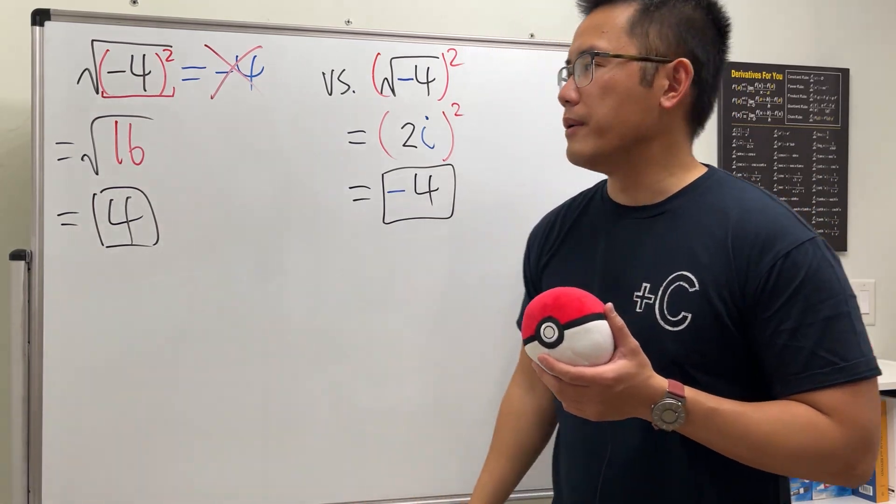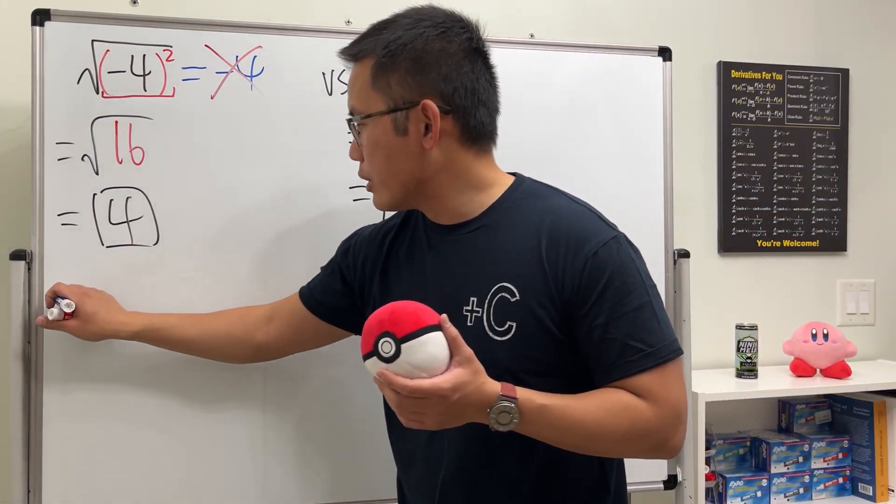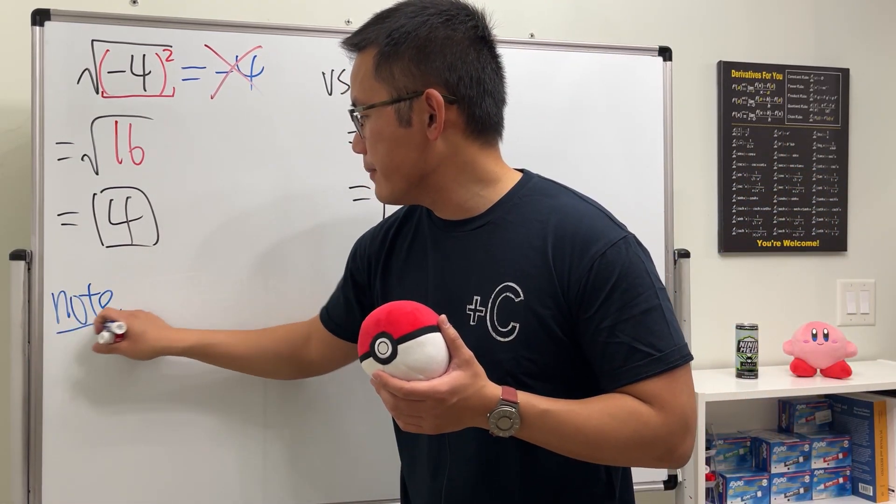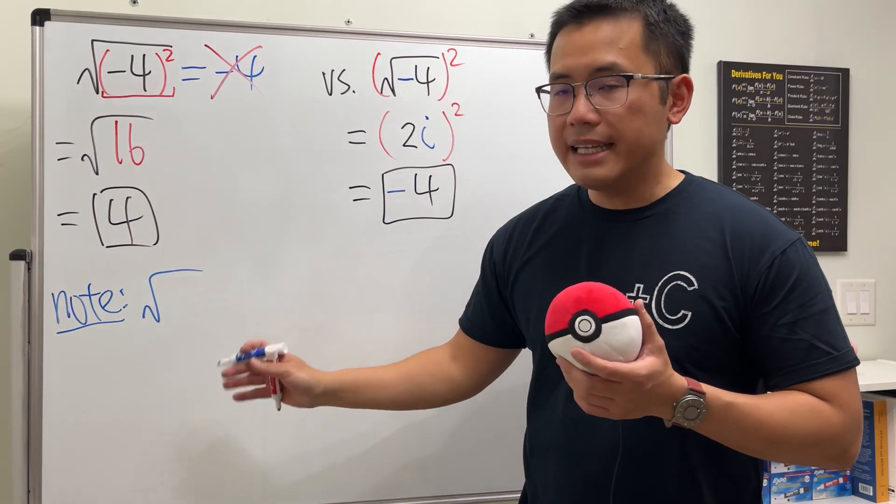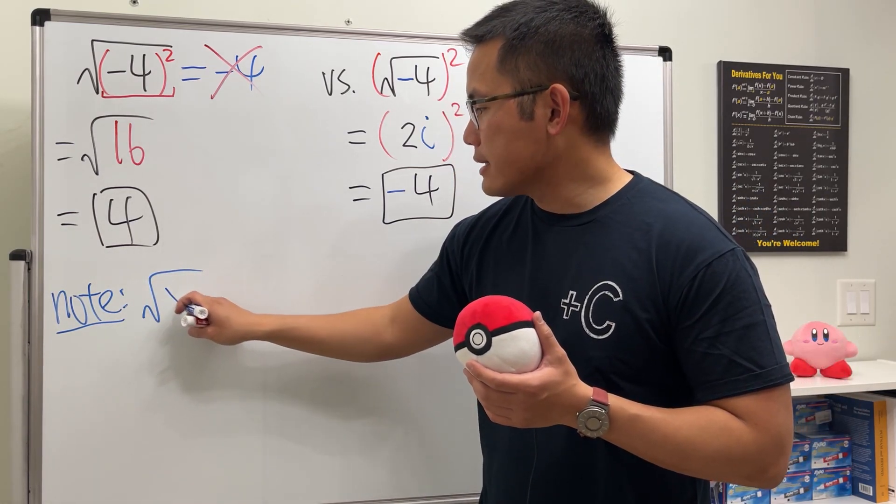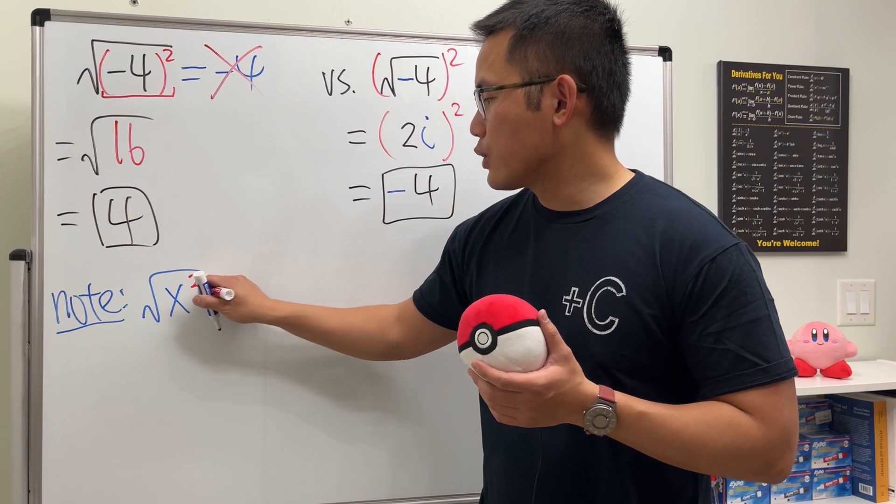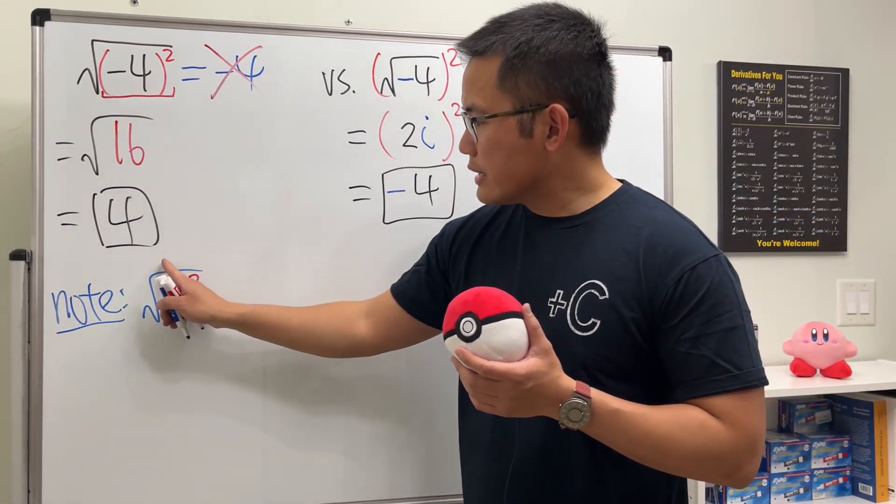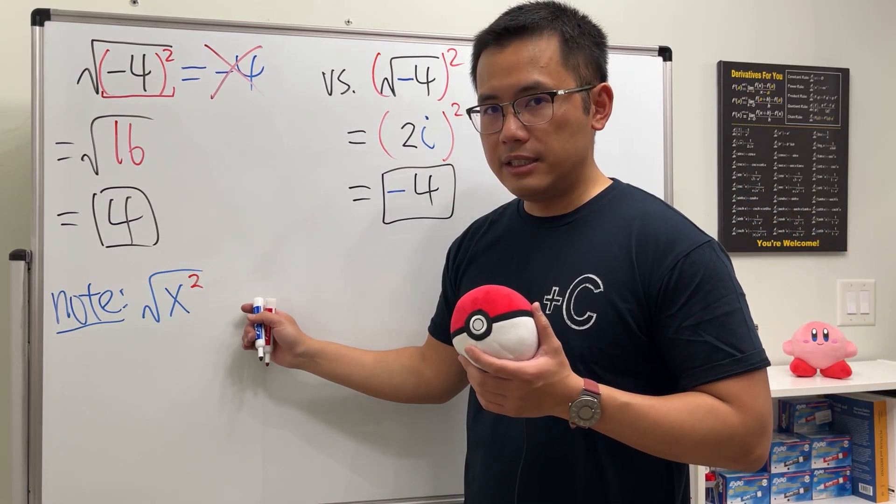And that's a very important point right here. Let me write it down for you guys. When we have a square root on the outside, and then if we have some number x and then square, do not just cancel this and that and say the answer is equal to x.